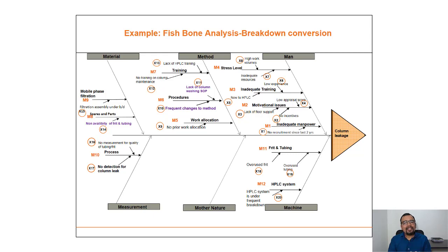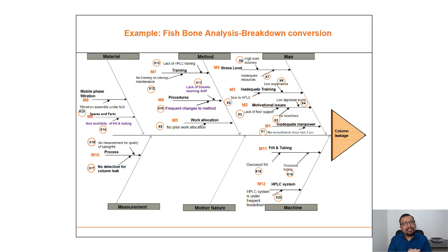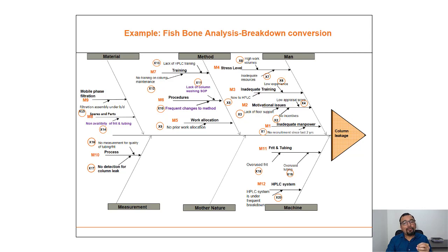Let us understand the construction of a fishbone with a practical example: column leakage during HPLC analysis. The six categories are Man, Method, Material, Measurement, Mother Earth, and Machine. Under the Man category, four causes are identified: inadequate manpower (M1), motivational issues — the team is not motivated, inadequate training to the manpower, and stress level.